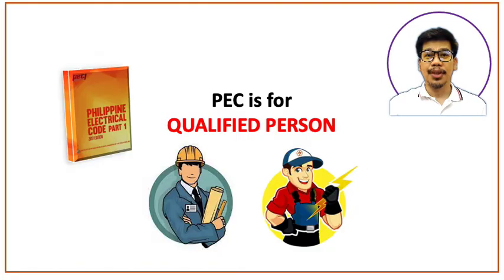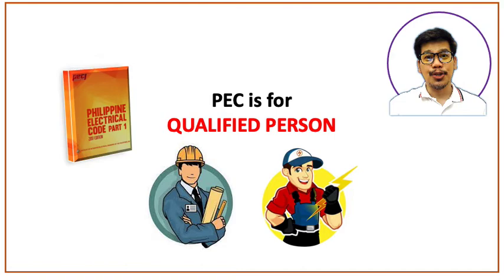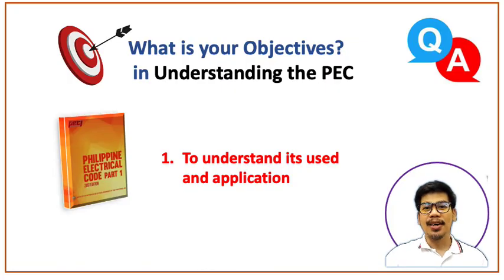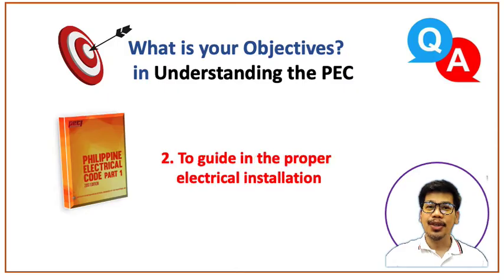Qualified people include RMEs, REEs, PEEs, electrical consultants, electrical contractors, insurance personnel, office of the building officials staff, and other related trades in the electrical profession. What are your objectives in learning PEC 2017? You are here to understand PEC, its use, and application. You are here because you want to be guided for proper electrical installation — whether you are an electrician, electrical contractor, electrical practitioner, or building official — and you want to add another bite of knowledge from PEC 2017.